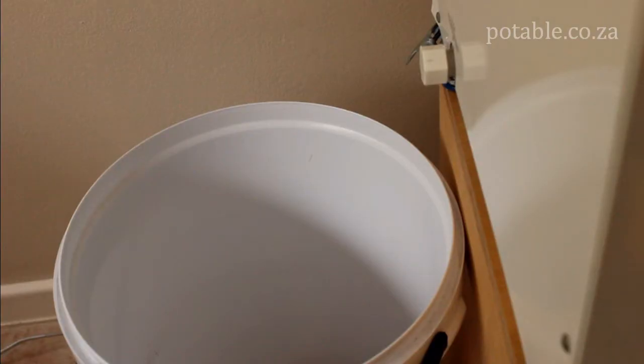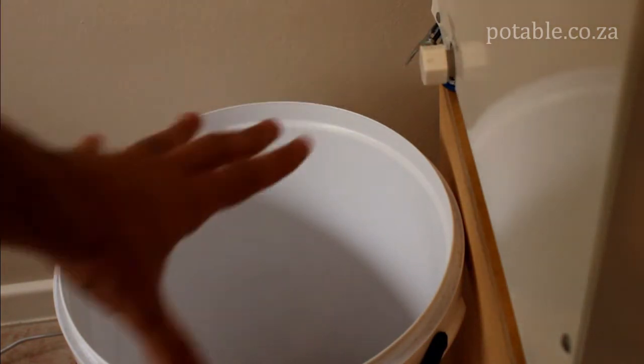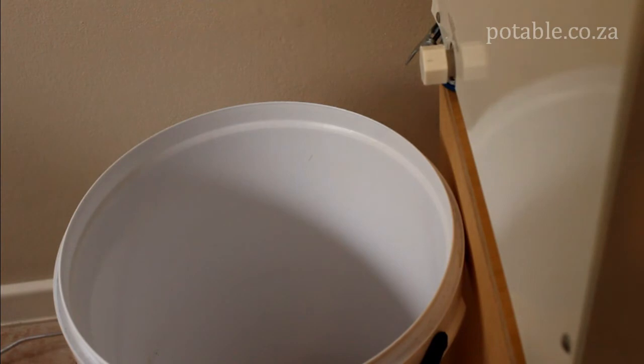In order to release bulk water from the unit all you need to do is turn the unit around and open up this outlet valve into a bucket. All 19 liters that are kept in the storage tank will then be released into the bucket.